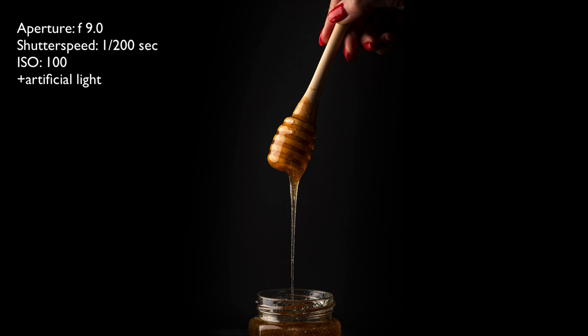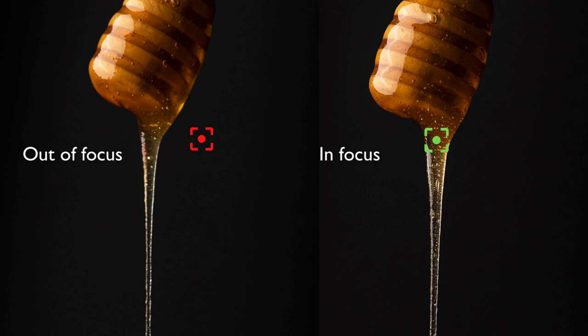As you can see, it worked perfectly. But if you move the honey dipper outside of the focus area, the drizzle will no longer be in focus, like you can see here. So make sure to set your focus correctly before shooting and keep the drizzling honey where you have set the focus.